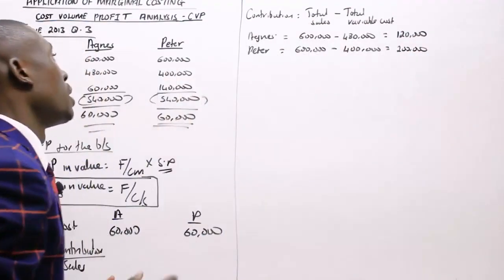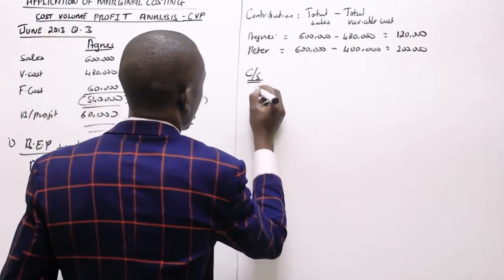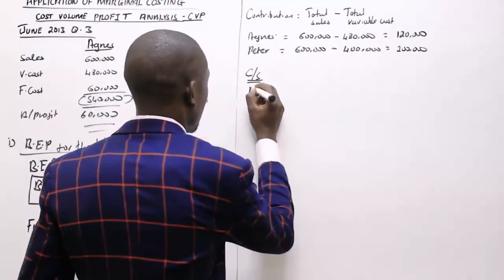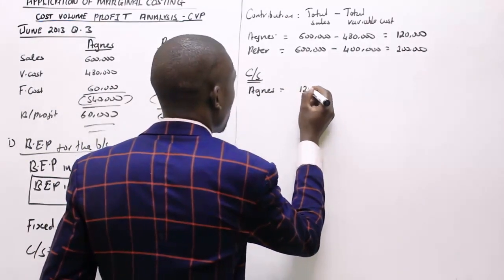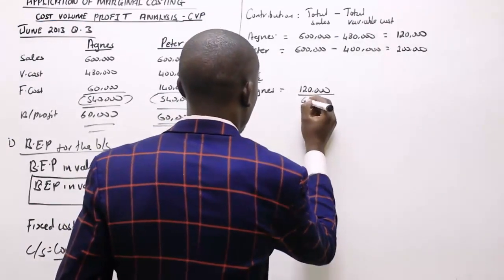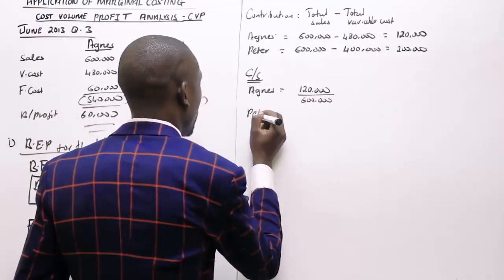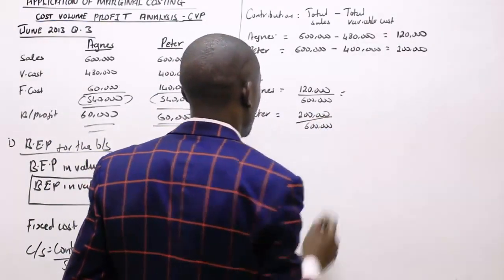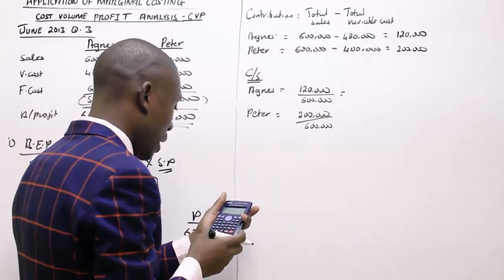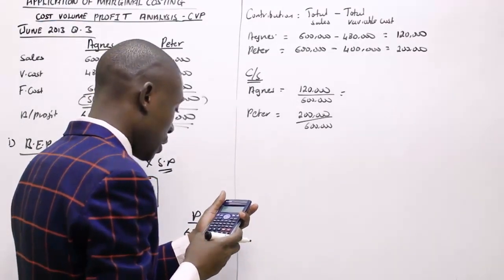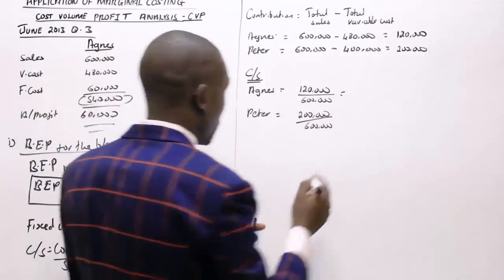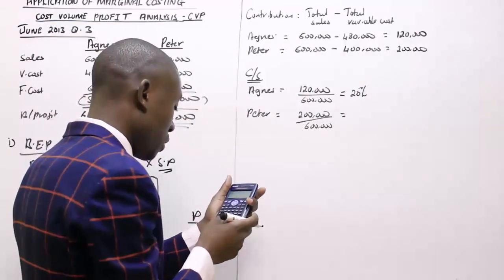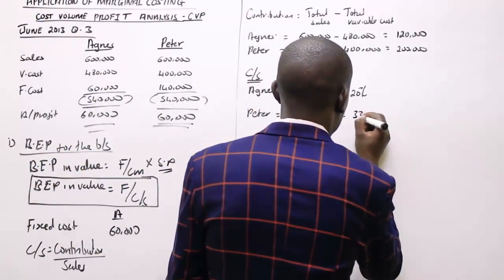After determining our contribution, I can determine the CS ratio. For Agnes: contribution of 120,000 divided by sales of 600,000 gives a CS ratio of 20%. For Peter: 200,000 divided by 600,000 gives a CS ratio of 33 and one-third percent.